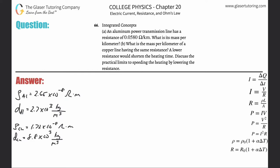Number 66, integrated concepts, letter A. An aluminum power transmission line has a resistance of 0.058 ohm per kilometer. What is its mass per kilometer?